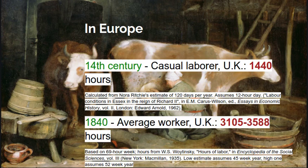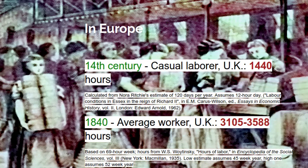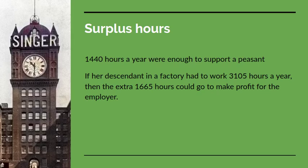Once Britain became capitalist, the average worker in the UK was working over 3,100 hours a year — a 45-week year, or if we assume a 52-week year, 3,588 hours. And of course they wouldn't be doing it under rural conditions; they'd be doing it under factory conditions of much more intense work. If 1,440 hours a year were enough to support a peasant, and her descendant in a factory had to work 3,105 hours a year, then the extra 1,600 or so hours could go to make profit for their employer.